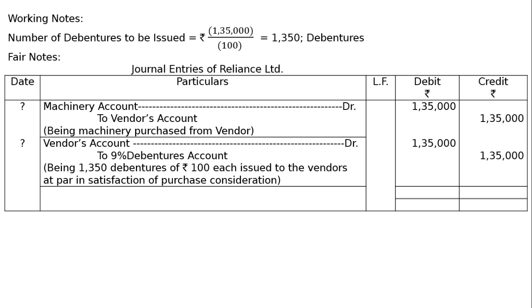These two entries are to be totaled. The amount column will be totaled, that is Rs. 2,70,000 in the debit as well as in the credit column.